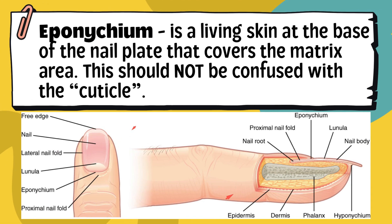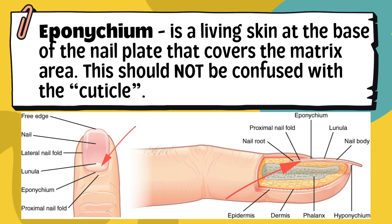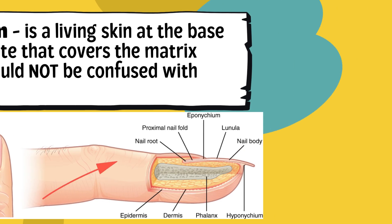Second, the eponychium is the living skin at the base of the nail plate that covers the matrix area. This should not be confused with the cuticle. The eponychium is the thickened layer of living skin at the base of the nail plate where the nail meets the skin of the finger, forming a protective seal over the nail matrix. The eponychium is the living tissue, while the cuticle is the dead, clear, flaky skin stuck right onto the flat part of the nail as it grows longer.